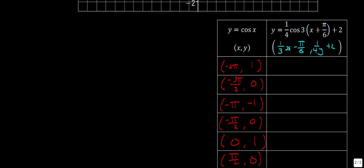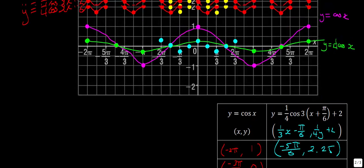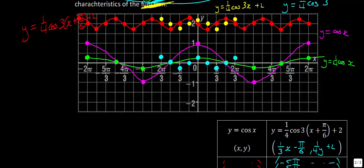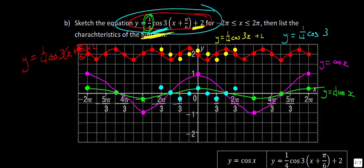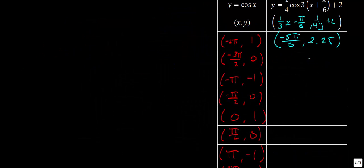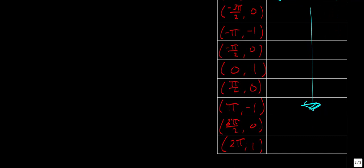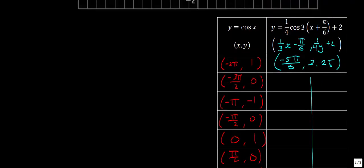For example, putting x = negative 2π into the formula gives (1/3)(−2π) − π/6 = −2π/3 − π/6. Getting a common denominator gives −4π/6 − π/6 = −5π/6. For the y value, 1 times one quarter gives one quarter, plus two gives 9/4 or 2.25. So the point is (−5π/6, 2.25), which corresponds to a point on the red graph. I think you're going to prefer the first graphical method I showed you.